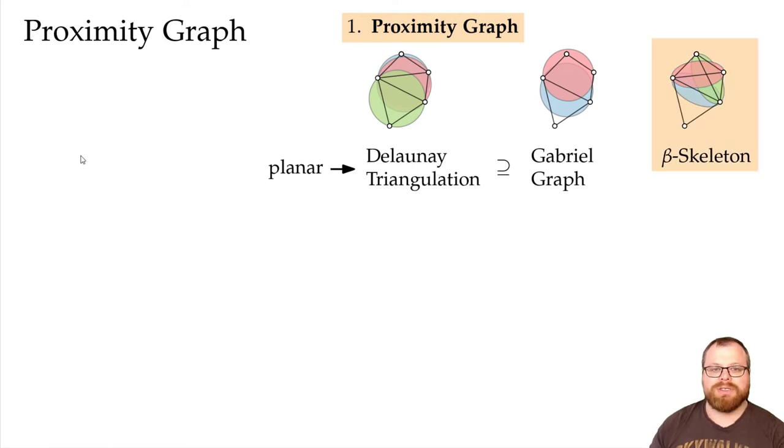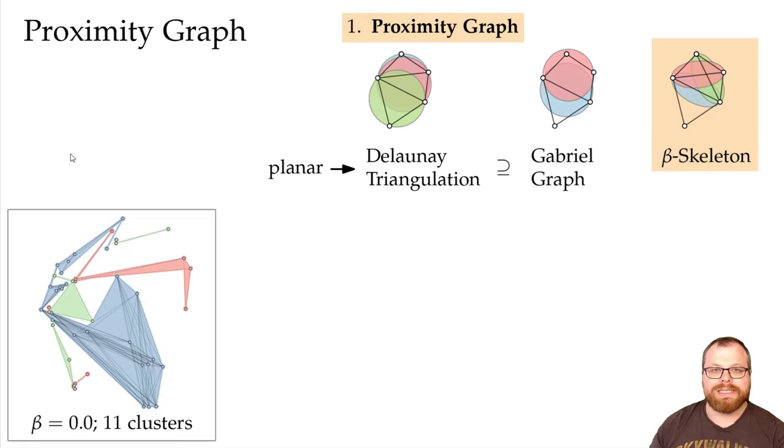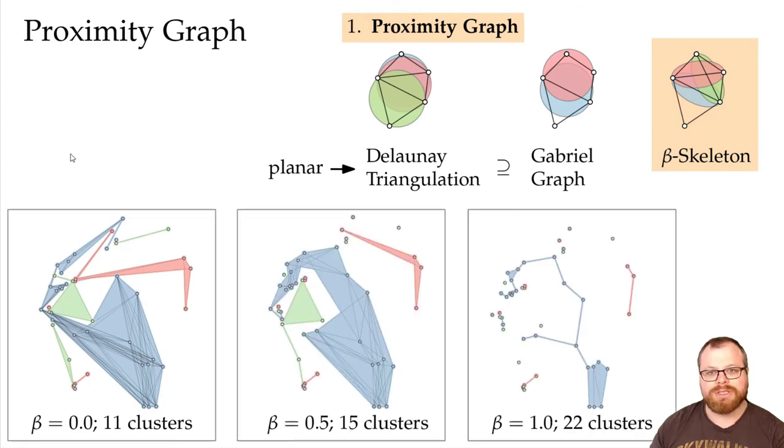I want to show you an example on the influence that beta has on the solution. For beta equals zero we get a very small number of clusters, but we also have connection between vertices that are not really close. While for beta equals one we get many clusters and most of the points are singletons. Instead, choosing something in the middle seems to be the better choice.